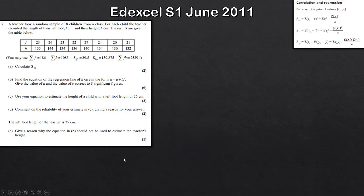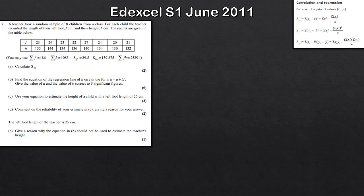These questions are taken from S1 papers. We have some context: a teacher looking at a random sample of eight children from a class, where the length of their left foot is recorded along with their height. Both of these are given in a table. We're asked to calculate some summary statistics — you're usually given most of them just to save time, but you will usually have to calculate one or two, and then calculate something like the regression line or the correlation.